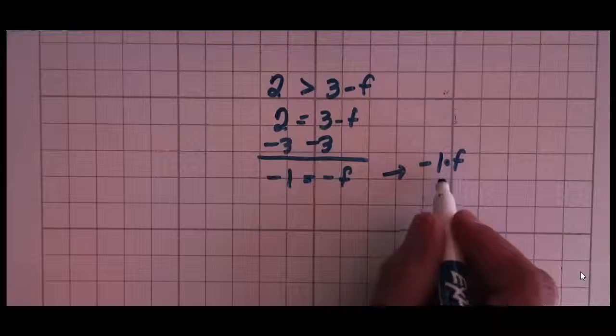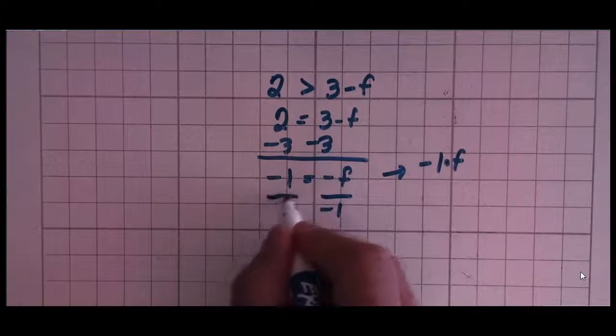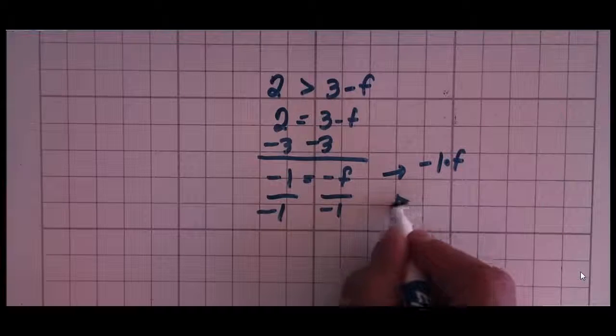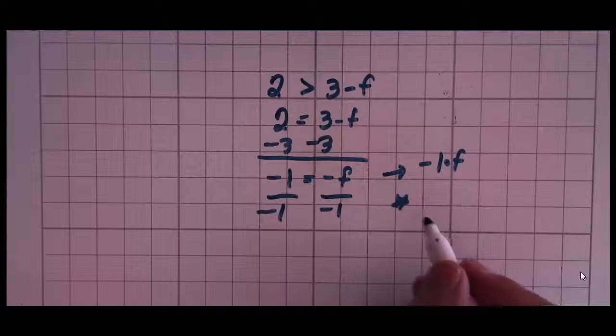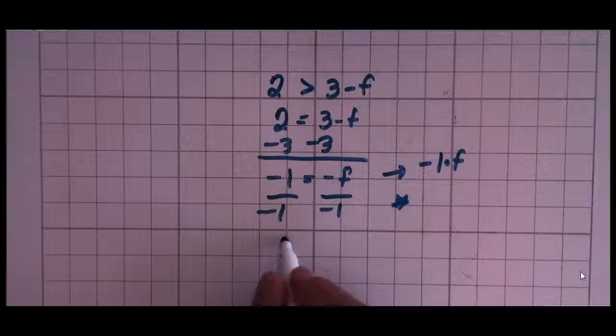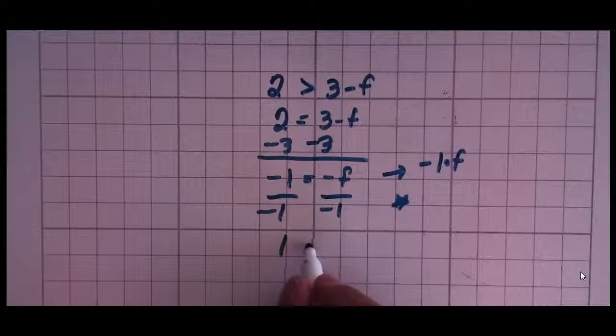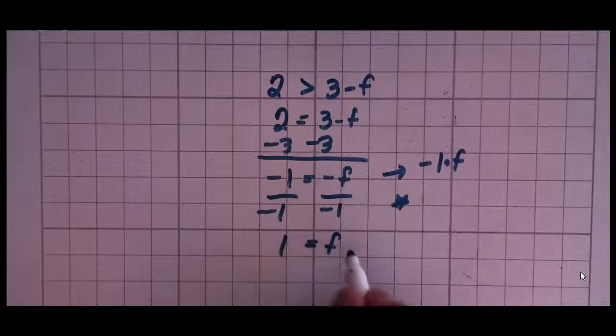So to get that separated, to separate those two which are multiplied, I'm going to divide by negative 1. Now as soon as I say divide by, and there's a negative number, that should set up a little flag for you that you're going to have to do something with that later. Negative 1 divided by negative 1 is 1. And negative 1 divided by negative 1 is 1. So 1 equals f.